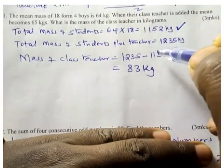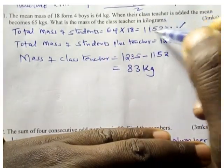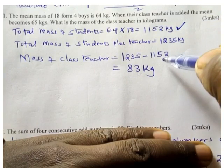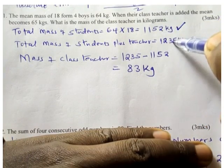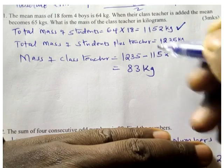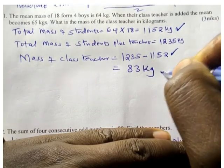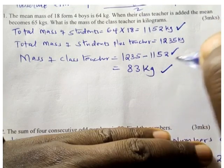To get the mass of the teacher, take the total mass of students and teacher, then subtract the mass of the students alone. 1,235 minus 1,152 equals 83 kilograms.